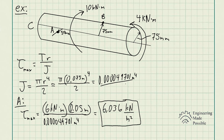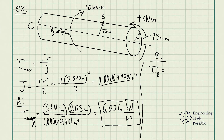Now, this is not the maximum stress the rod experiences overall — it's specifically the stress at point A. Remember, the maximum shear stress would be at the surface, which in this case is point B, and that's what we're going to solve next. The radius at B is 75 millimeters, right at the surface, so this will be the maximum stress the rod experiences.